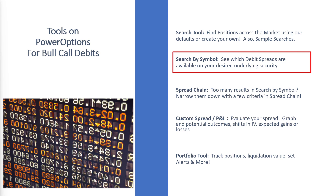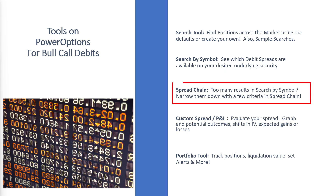The Search by Symbol tool lets you see which debit spreads are available on your desired underlying security. The Spread Chain is a great way to narrow down results, adding in a few criteria one stock at a time that aren't available in the Search by Symbol tool.